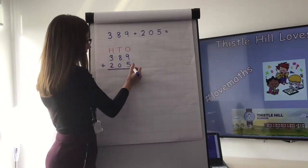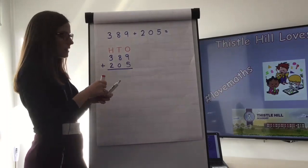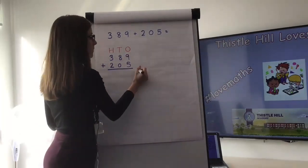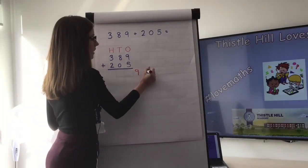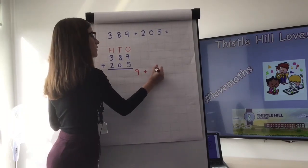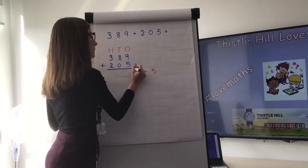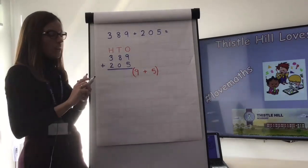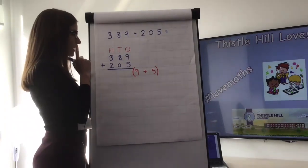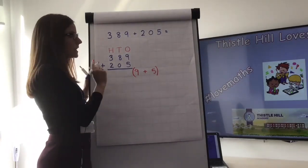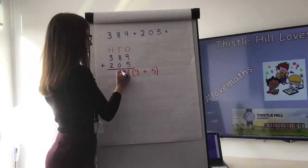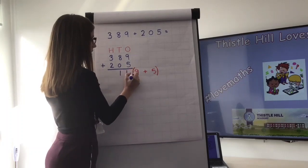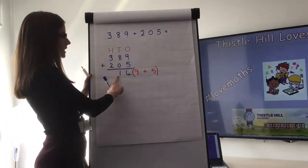Going back to the ones column: this time I've got nine and I'm adding five to it. Nine add five is 14. Because 14 has one ten and four ones, we write 14 spanning our tens and ones columns.